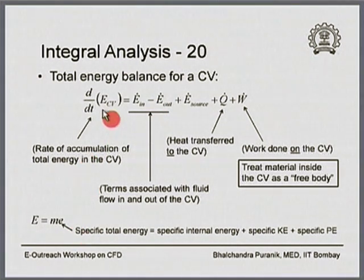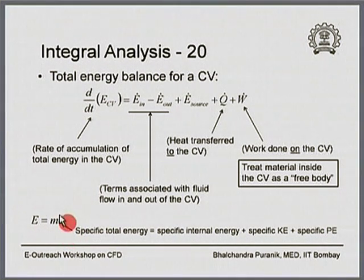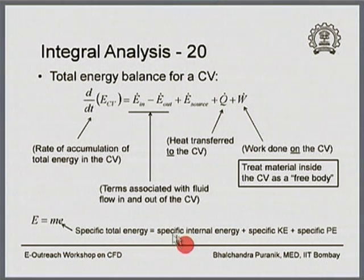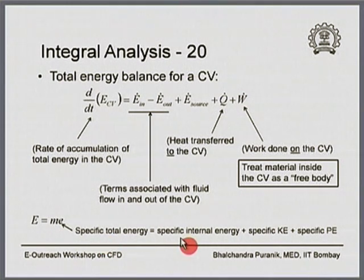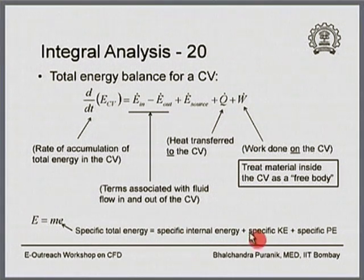The total energy, capital E, is expressed as the mass content times the specific total energy, small e, shown at the bottom of the slide. This specific total energy is composed of: specific internal energy due to random motion of molecules or atoms of the fluid; specific kinetic energy, which exists because of non-zero fluid velocity; and specific potential energy, because these interactions happen in a force field such as gravity. The total specific energy is the addition of these three terms, and capital E in the main balance equation is the sum of these three types of energies in general.